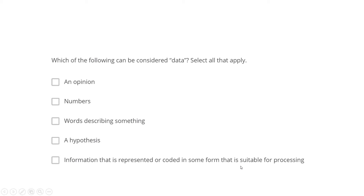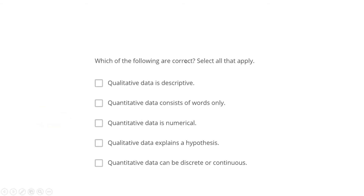For example, consider a digital image - it has pixels, pixels have intensity values, and this is nothing but data. This digital image is information represented so that our computer can easily interpret it. The pixel intensities are discrete values our computer can easily process. So the correct answers are: numbers, words describing something, and information coded in a suitable form.